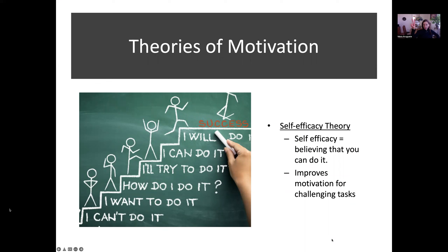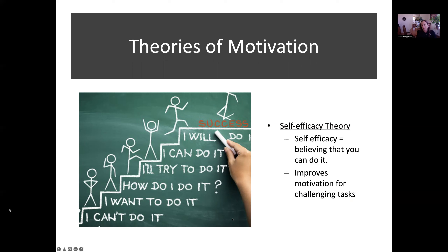Motivation theory number two is self-efficacy theory. Efficacy, coming from the word effective, is believing that you yourself are effective — believing that you can do it. This is a big factor for motivation. If you think you can't do math, for example, you won't even try. So believing that you can do it affects your motivation to move toward it. If we can get people to believe they can do math, they're more likely to do well because they're more likely to try and practice.